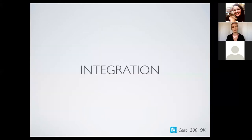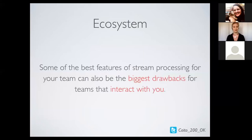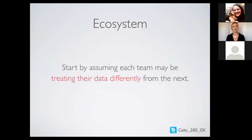Moving to integration: as we integrated into the technical ecosystem, we found that some of the best features of stream processing can also be the biggest drawbacks for teams that interact with us. If you're unifying streams of data owned by different teams, you may find that some teams who thought they all treated their data the same actually don't. We found it was best to assume each team may treat their data differently. We had very specific needs for aggregating data, and not all teams were able to implement logic fast enough on their ends to adhere to our schema before launch — so we created an additional Flink application that provided aggregation calculations on data that still needed it, rather than depending on other teams.